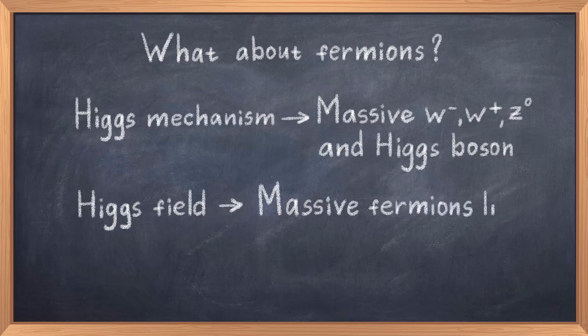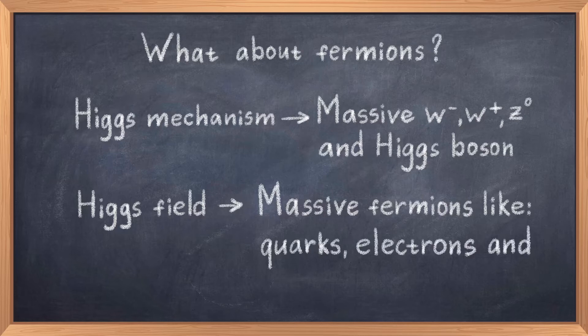All massive particles interact with the Higgs field and obtain their mass from that. Thus the massless photons and gluons do not interact with the Higgs field, and therefore there is no Feynman diagram vertex that connects these particles to the Higgs boson.